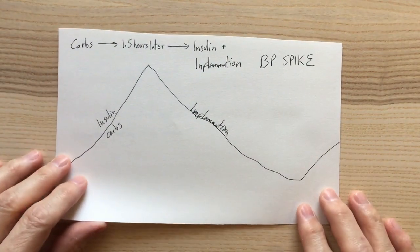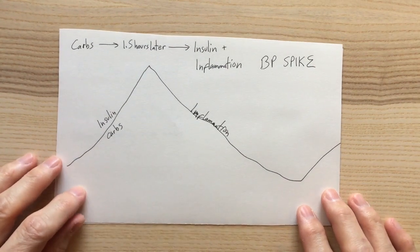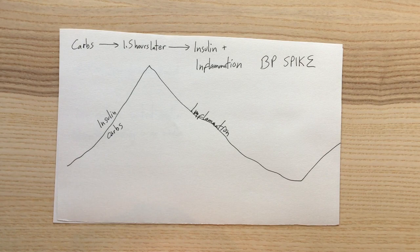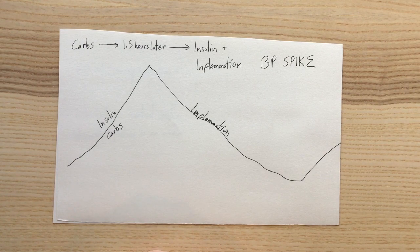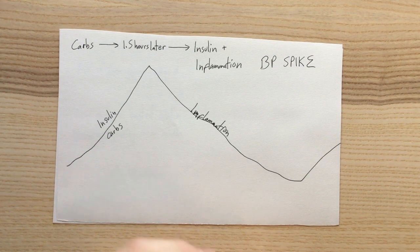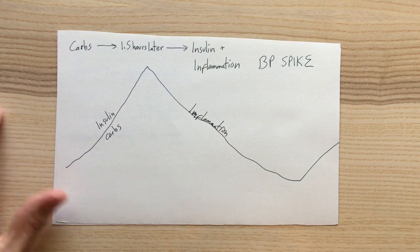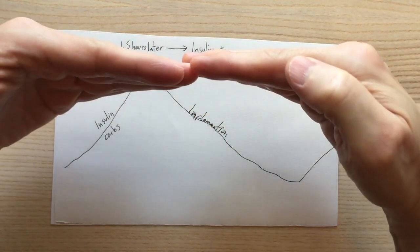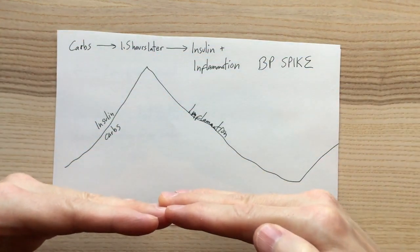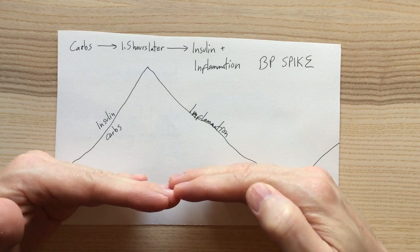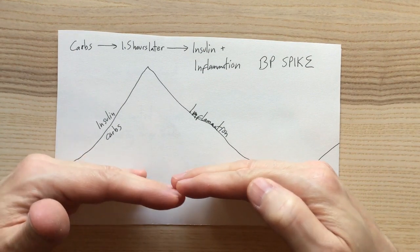I basically starved myself. I did not eat hardly anything. I would eat like a piece of broccoli and an egg or something, and that was my lunch and my dinner. I did this for four or five days and the problem vanished. My blood pressure medication caused me to go way low, like my blood pressure was like 89 over 59 or something stupid.